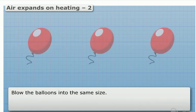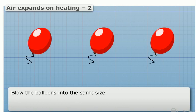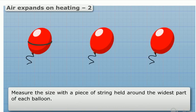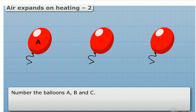Method: Blow the balloons into the same size. Measure the size with a piece of string held around the widest part of each balloon. Number the balloons A, B, and C.